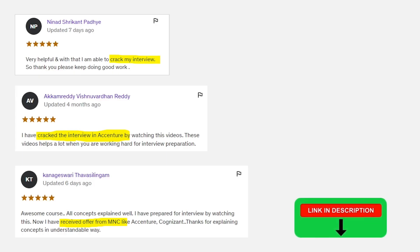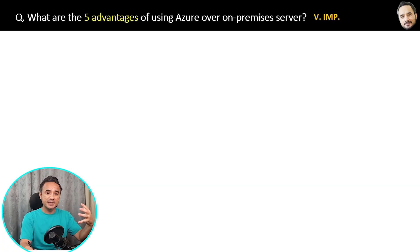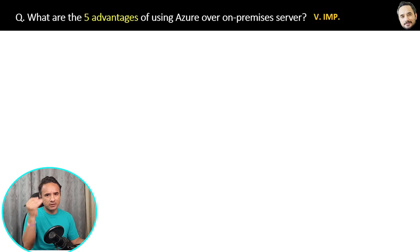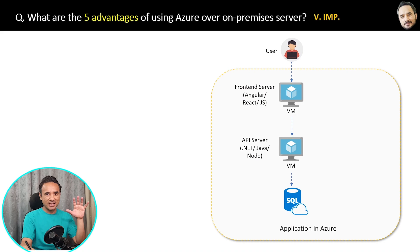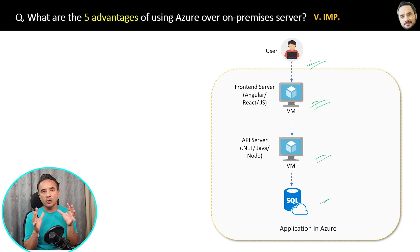Let's continue: what are the five advantages of using Azure over on-premises servers — or why use Azure at all? Here is the same example where a user is accessing the front-end, then the API server, and the database. The first clear advantage of Azure is cost saving.